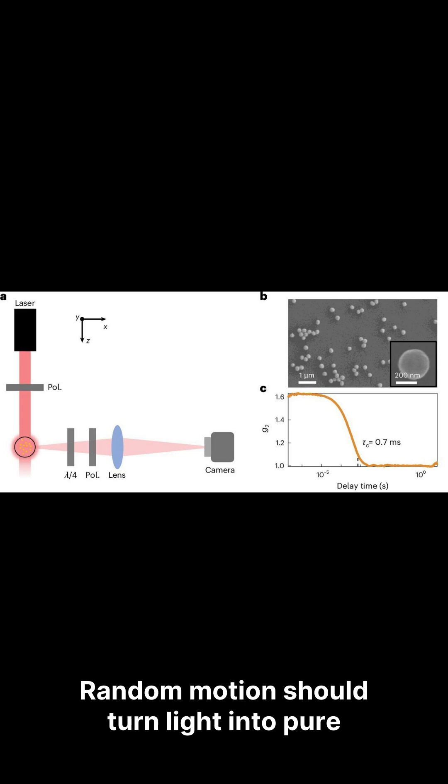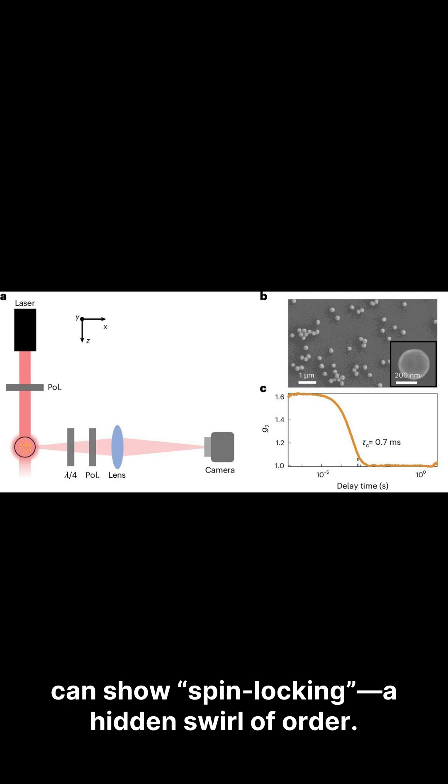Random motion should turn light into pure chaos. But a Nature Materials paper reports something weirder. In a Brownian liquid, scattered light can show spin locking, a hidden swirl of order.